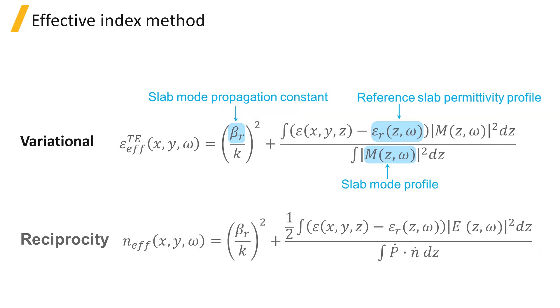In the equations, epsilon_r is the reference slab permittivity profile, M is the selected slab mode profile, and beta_r is the slab mode propagation constant. For more detailed information, see the references for the two effective index calculation approaches listed below this video.